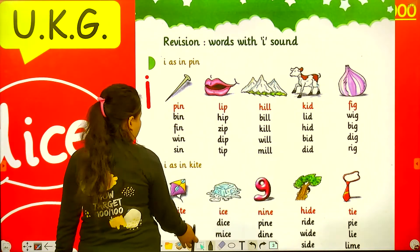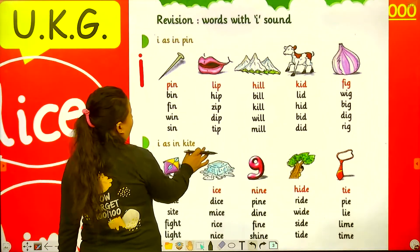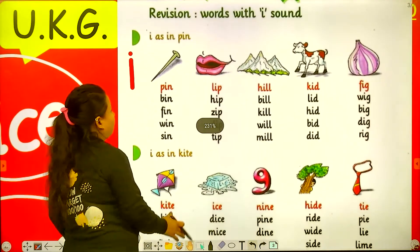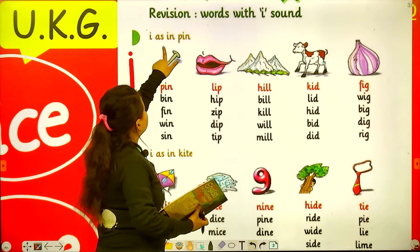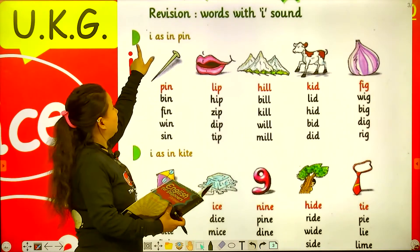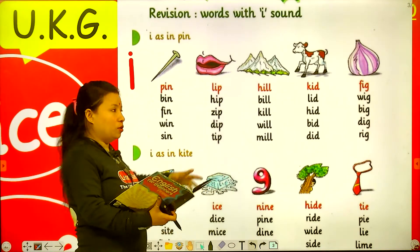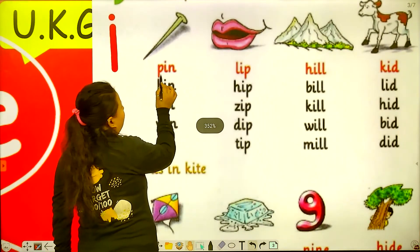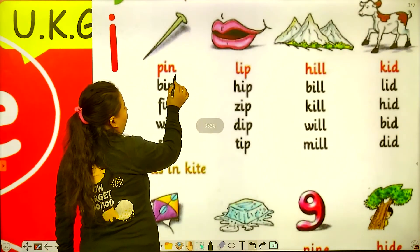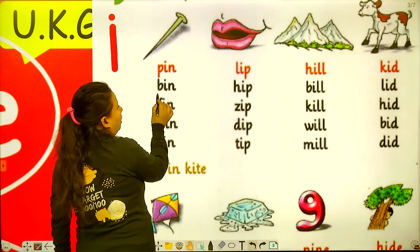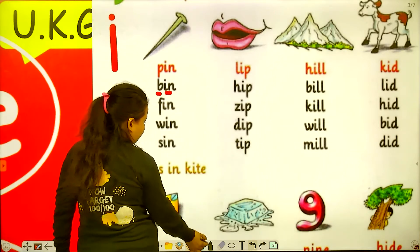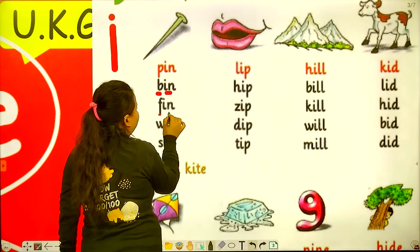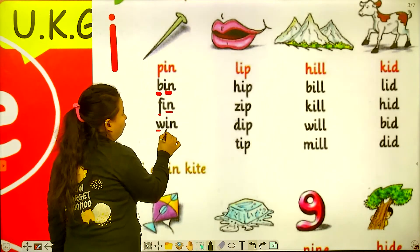So how is it possible? Now first of all you have to speak after me. I as in pin — E as in pin. So P-I-N: pin, bin, fin, win.